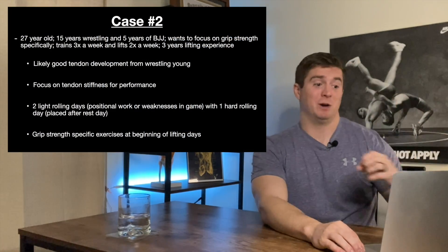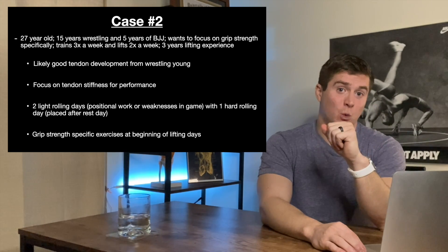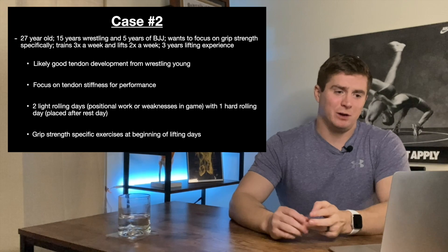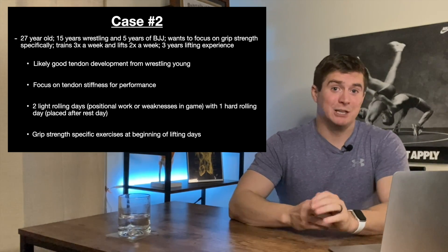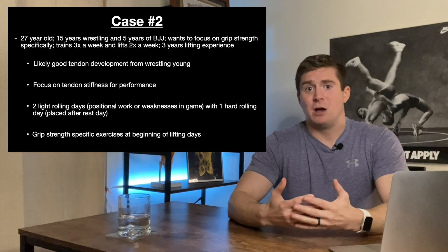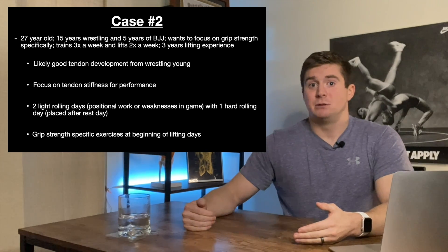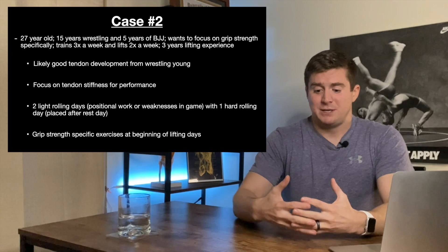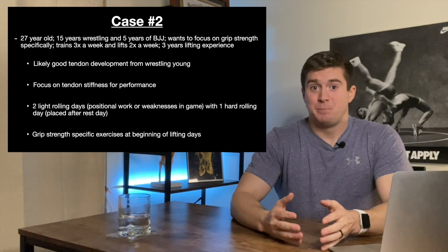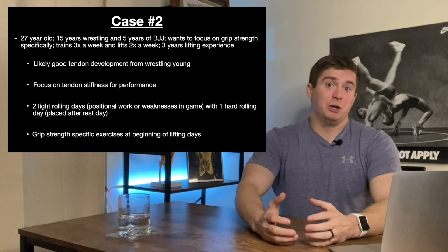Case number two: a 27-year-old who's been wrestling for 15 years and doing BJJ for five years. He wants to focus on grip strength specifically. He trains BJJ three times a week and lifts twice a week, and has been lifting for about three years — so he's on the later end of novice, maybe intermediate. The first thing to note is he's probably got really good tendon development from wrestling at a young age. The consensus is pretty clear that you start laying down collagen in your tendons for the first 17 to 18 years of your life, and after that new collagen stops being laid down. So the tendons you have to work with are pretty much set at 17 or 18. If you start wrestling or rock climbing at a young age, your tendons are going to be very big and well developed. So he's already got a really good foundation for tendon health.